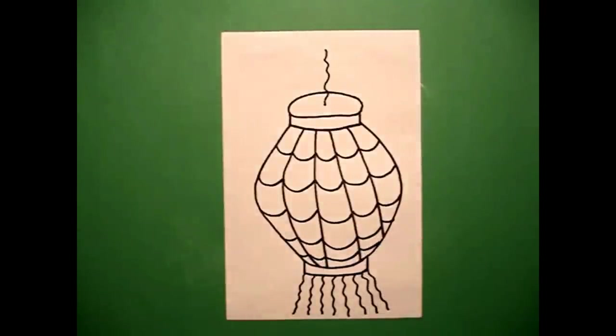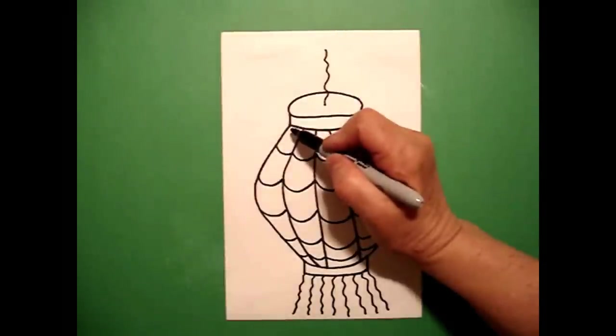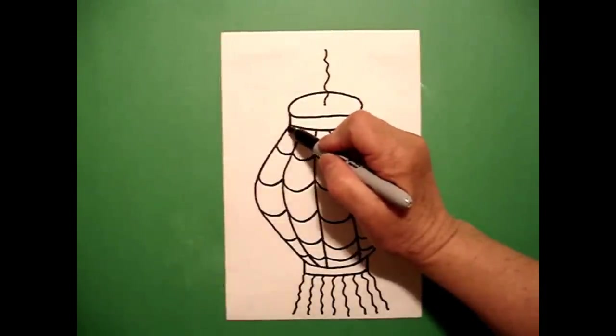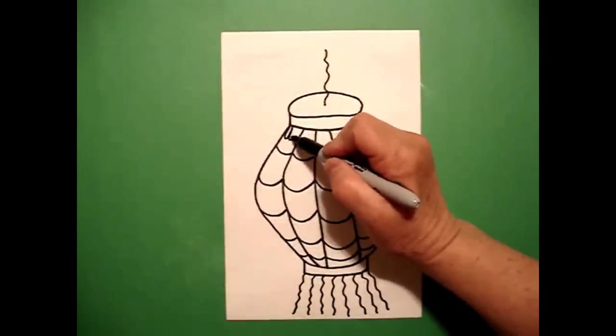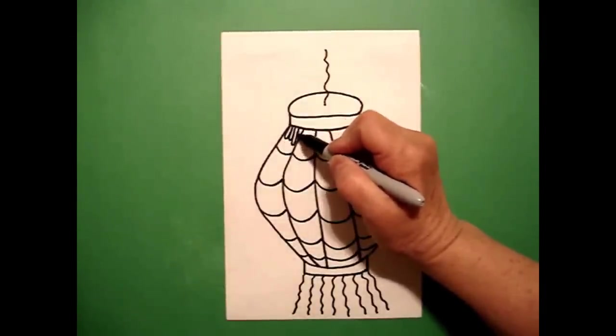Okay, now I come back up to the top and I'm going to make a decorative border. So I draw a little curve line, little curve line, bigger curve line.